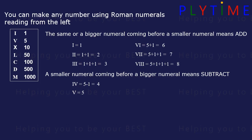The small numeral before a bigger number, I before X, is 10 minus 1, which is 9. X on its own is 10.